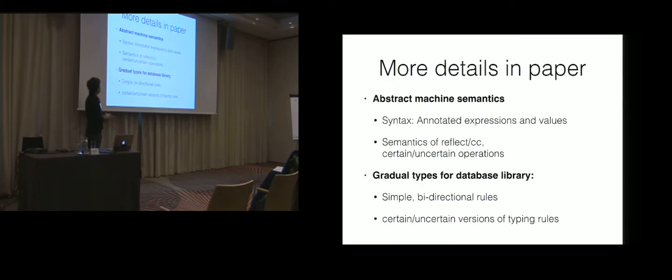So there's more details in the paper. In particular, there's a definition of this abstract machine. We talk about how we sort of can annotate sub-expressions or sub-values with annotations that the checker can use. We talk about the semantics of Reflect CC and these certain and uncertain annotations.